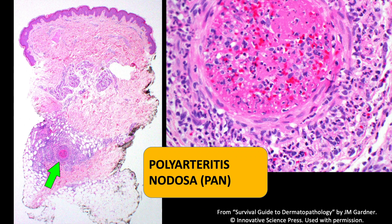This is a unique form of vasculitis that doesn't involve the small vessels of the dermis but instead involves a thicker muscular artery around the dermal-subcutaneous junction, usually seen as only one cross section of the artery. You can see fibrin thrombus in the middle, neutrophils trickling through the muscular wall and destroying it, and periarterial inflammation. This is polyarteritis nodosa — a very distinct appearance.